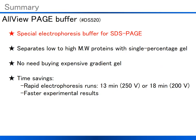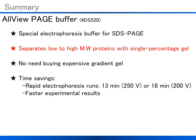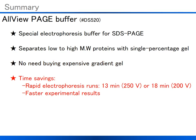In summary, AllView Page Buffer is a special electrophoresis running buffer for SDS-PAGE. It separates a wide range of sizes from low to high molecular weight proteins using a 6% single percentage gel, with no need to buy expensive gradient gels or precast gels. Time savings are significant, with rapid electrophoresis run times as short as 13 minutes at 250 volts or 18 minutes at 200 volts, giving experimental gel results sooner.